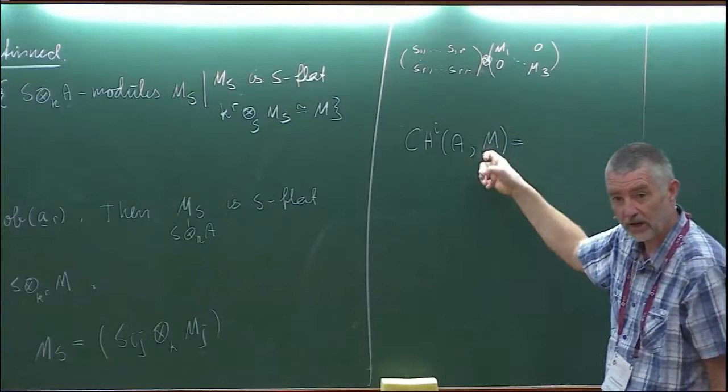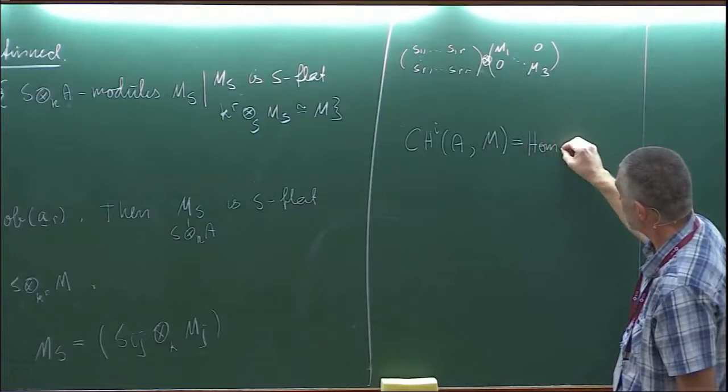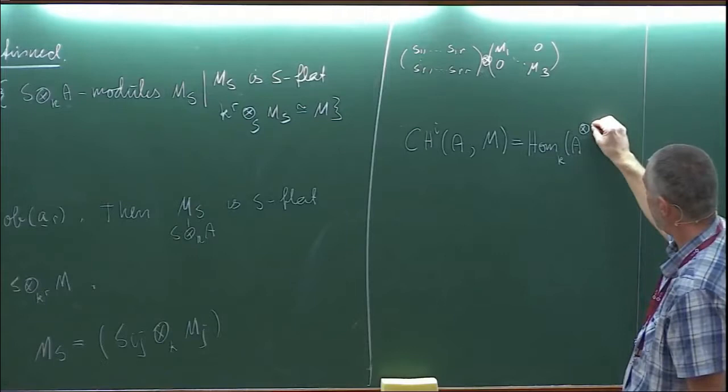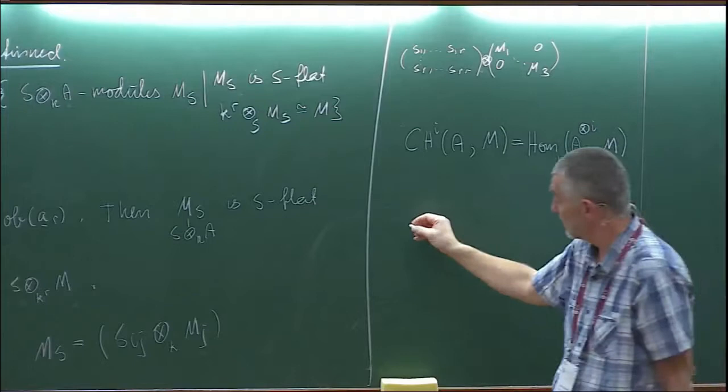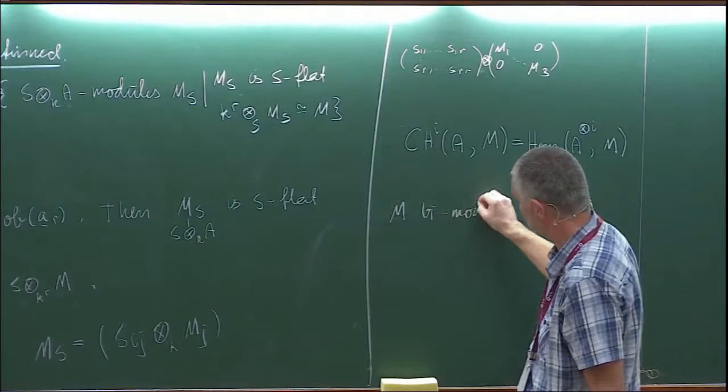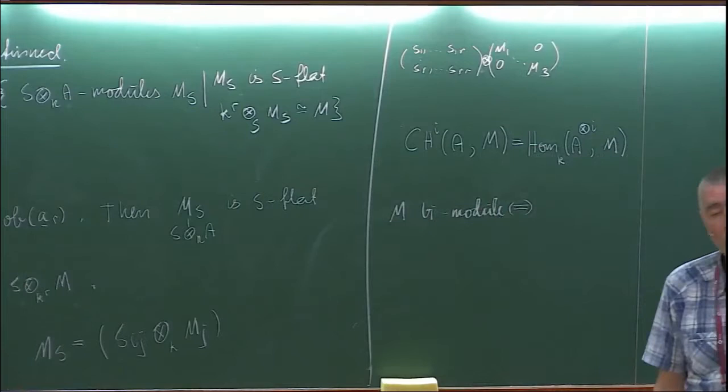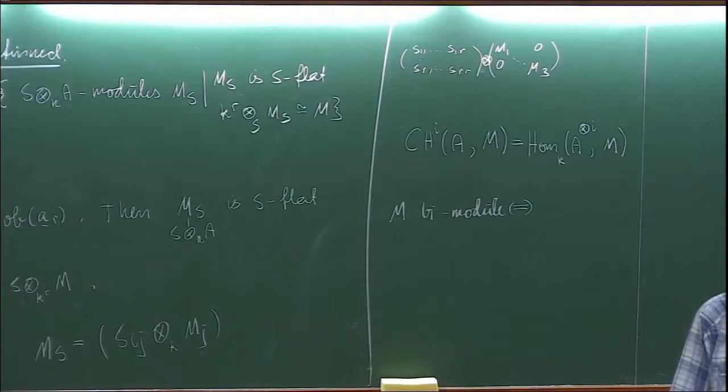I define the cochains C^i of a K-algebra A and an A-bimodule M as equal to Hom_K from A tensored with itself i times into M. An A-bimodule means that it is both a left and a right A-module.